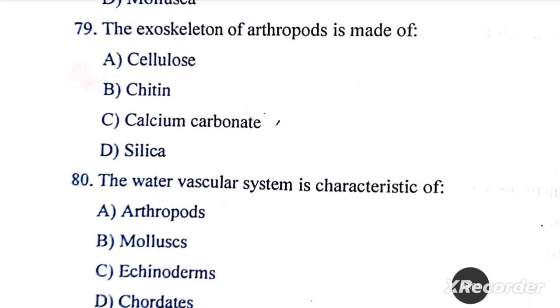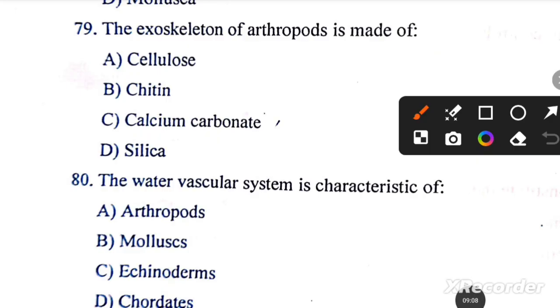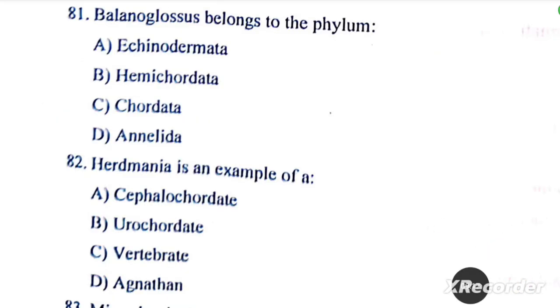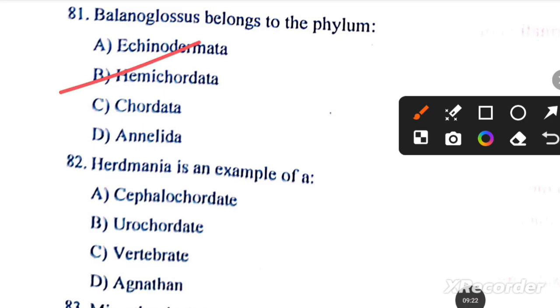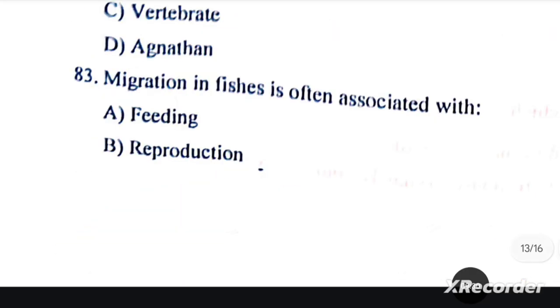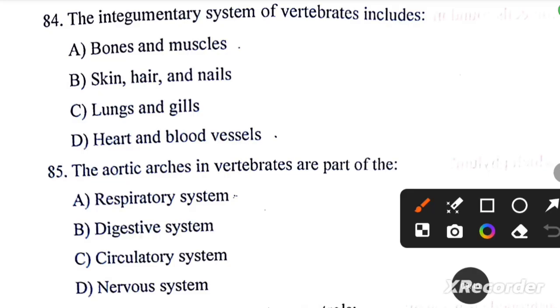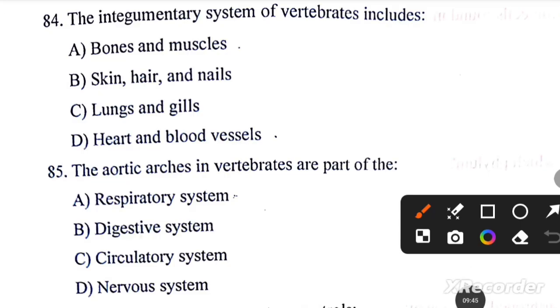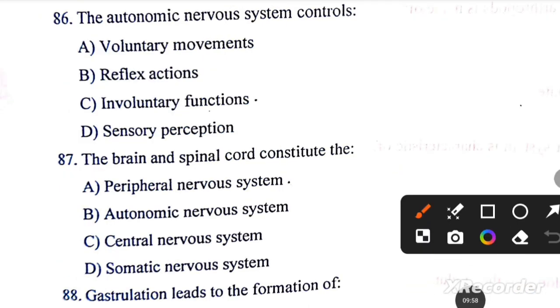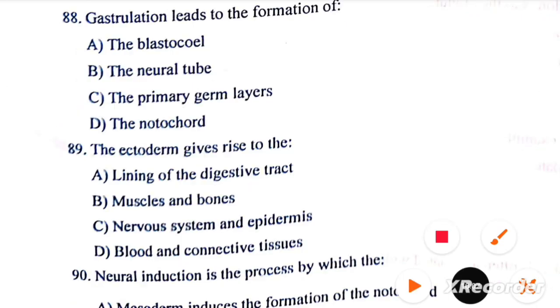Okay, next question: Paramecium belongs to which phylum? Platyhelminthes. The exoskeleton of arthropods is made up of chitin. The water vascular system is a characteristic of echinoderms. Balanoglossus belongs to the phylum Hemichordata. Next, Herdmania is an example of... the answer is option B. Migration in fishes is often associated with feeding and reproduction. Next question, question number 84: the integumentary system of vertebrates includes skin, hair, and nails. The aortic arch in vertebrates is a part of circulatory system. The autonomic nerve controls involuntary functions. The brain and spinal cord constitute the central nervous system.